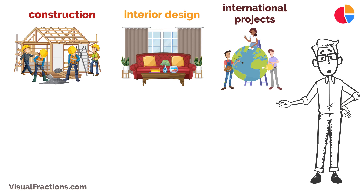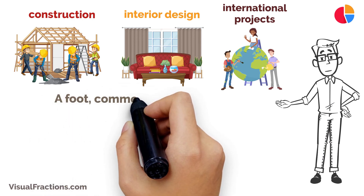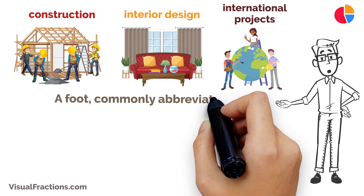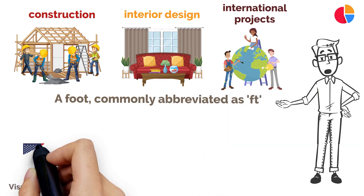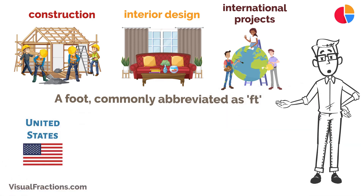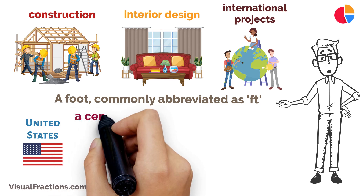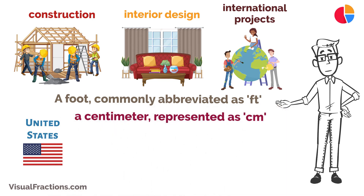Let's begin with the basics. A foot, commonly abbreviated as Ft, is a unit of length used mainly in the United States and a few other countries. On the other hand, a centimeter, represented as Cm, is a unit of length in the metric system, which is widely used around the world.